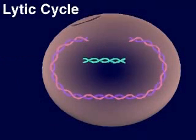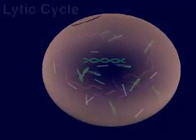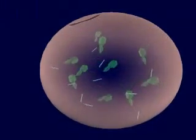At any time, a provirus may leave the host chromosome and enter a lytic cycle. When this happens, the host cell's DNA is broken down and new virus parts are produced and assembled.